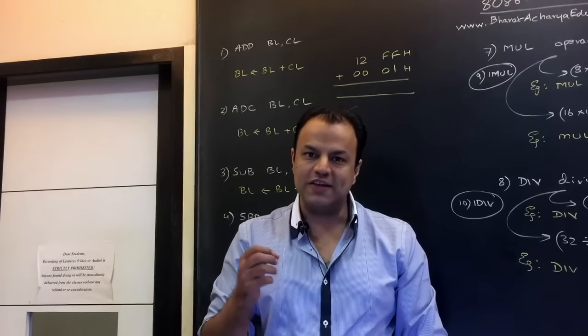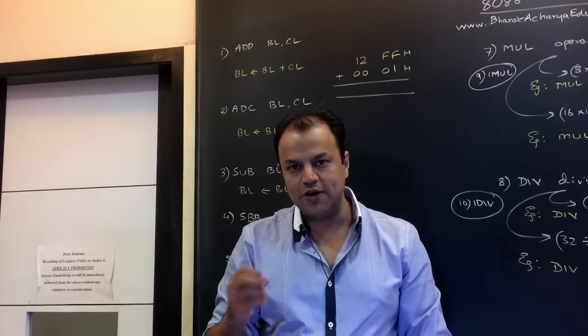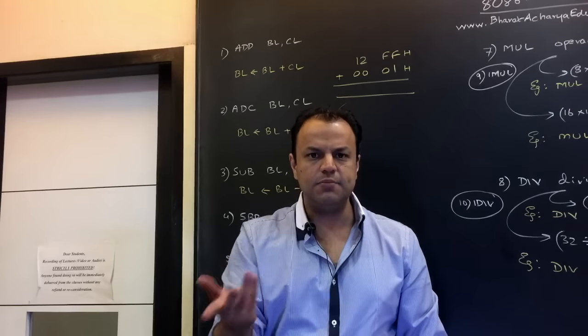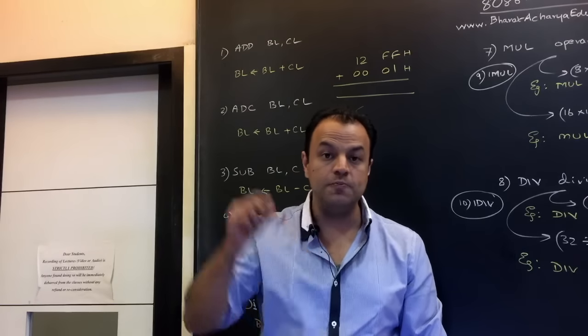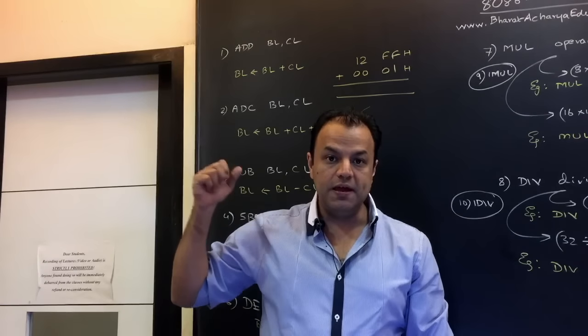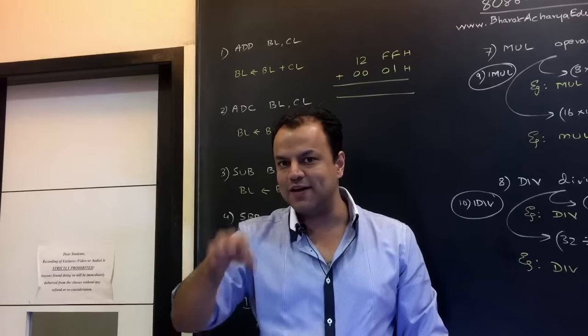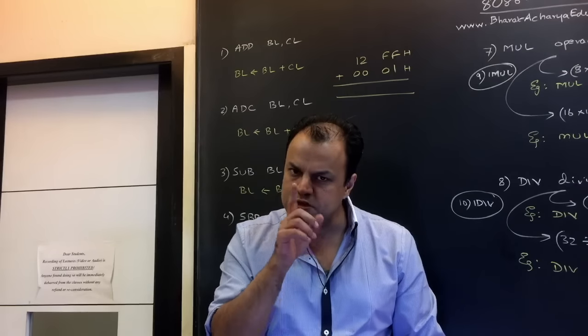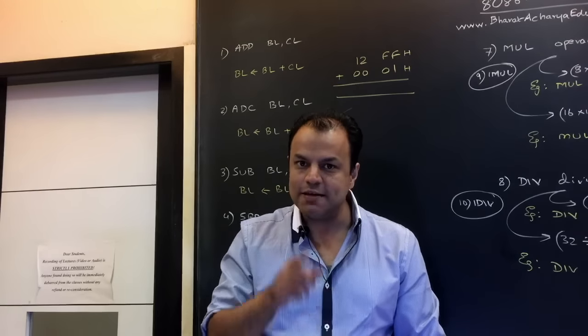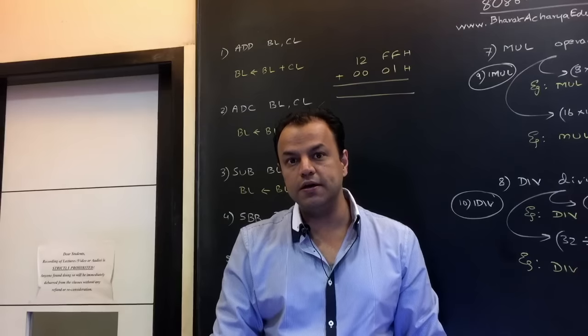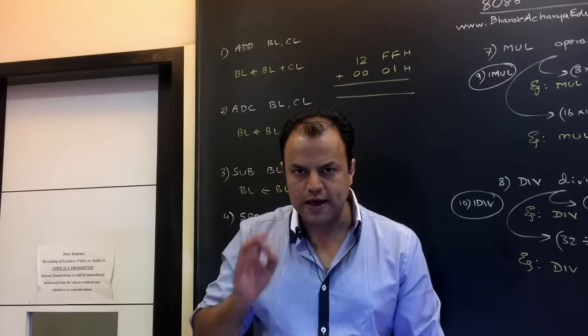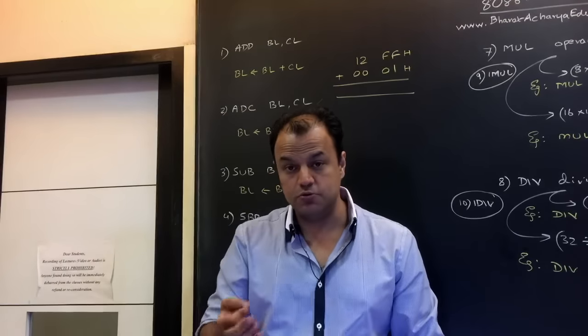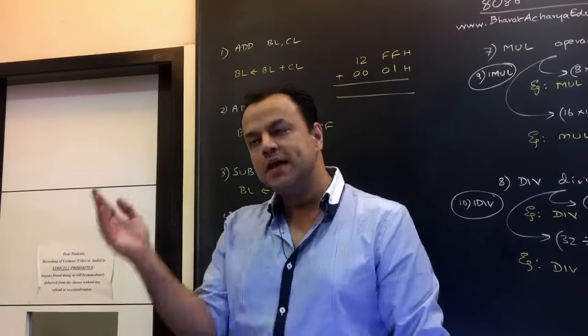Let's take an example. Suppose BL was FF and CL was 1. You're doing FF plus 1. FF plus 1 gives you 1, 0, 0. Treat FF as 99 for the sake of understanding. 99 plus 1 is 100. Similarly, FF plus 1 will give you hexadecimal 1, 0, 0. Now 1, 0, 0 is too big to fit in BL. BL will get 0, 0 and that 1 will go into the carry flag. If you do 0 plus 0, the answer will still be 0, which will be in BL. But this time, carry flag will be 0. So the point I'm trying to make is, after performing addition, please don't look only at BL. The answer is in BL and in carry flag.